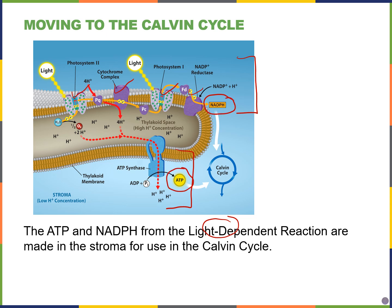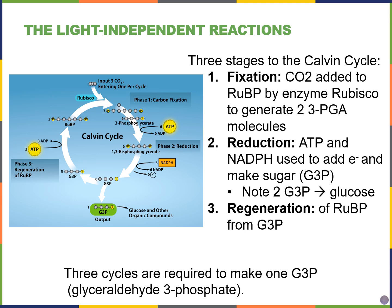These products — NADPH and ATP — will be needed for the light independent reactions, or the Calvin cycle. Even though we don't directly use light for the Calvin cycle, it cannot occur without light because the light reactions are what generate the ATP and NADPH required.